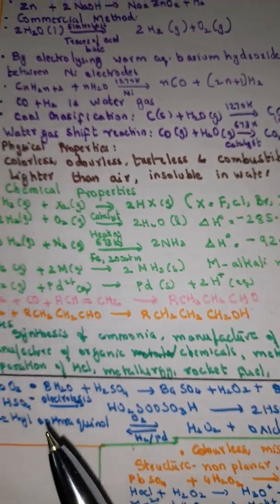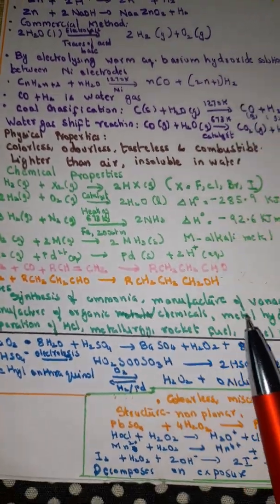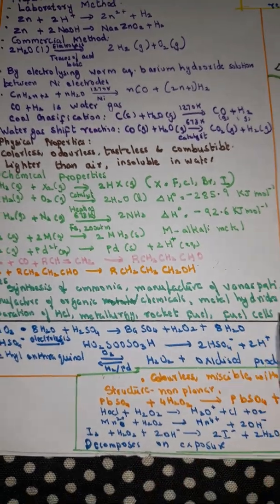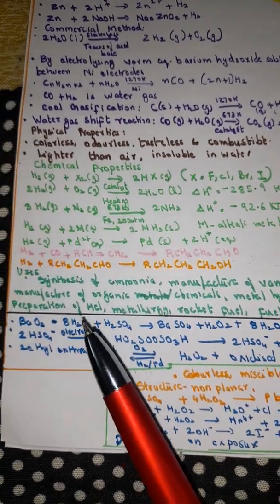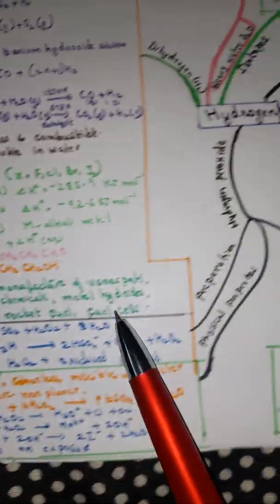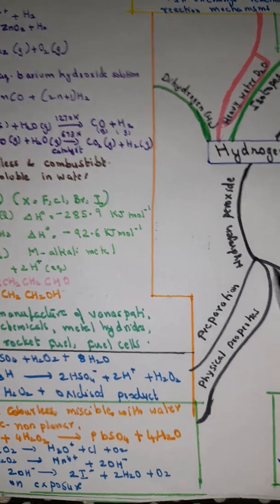We saw the physical properties and chemical properties. Uses include synthesis of ammonia, manufacture of vanaspati, manufacture of organic chemicals, metal hydrides, preparation of HCl, metallurgy, rocket fuel, fuel cells, etc.